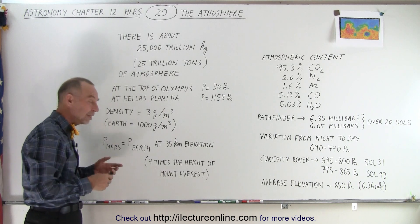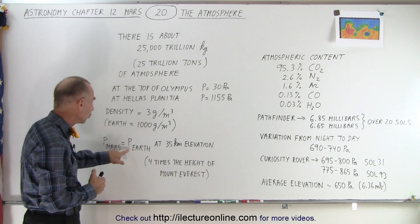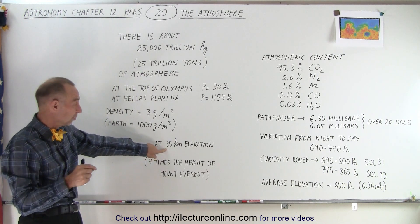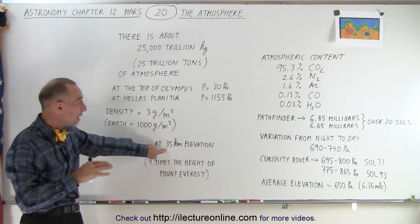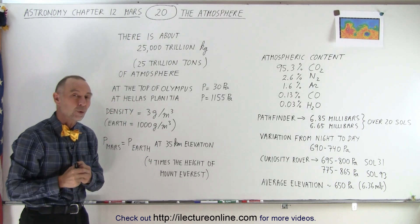And if you want to compare the pressure on average, the atmospheric pressure on average on Mars, to what it's like on the Earth, you have to go to an elevation of 35 kilometers. That's about 22 miles above sea level for the atmospheric pressures to be equated.